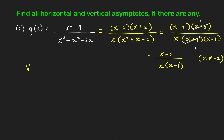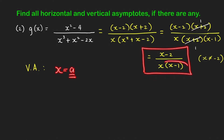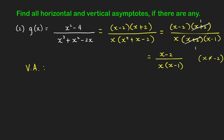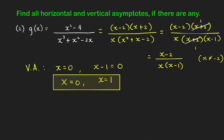To find the vertical asymptotes, we look at the simplified expression and find the zeros of the denominator. Setting each factor equal to zero: x equals zero, or x minus 1 equals zero giving x equals 1. So we have two vertical asymptotes: x equals zero and x equals 1.